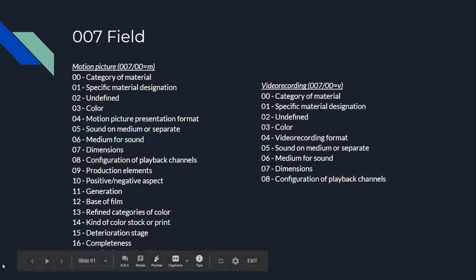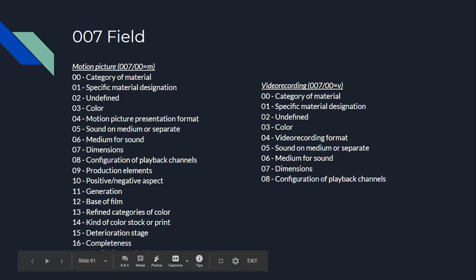The 007 field gets pretty complex for video. There are links to the MARC 21 standards for both motion picture and video recording. The 007 for motion picture gets into the nitty-gritty of the format of the film, while the video recording 007 covers the recording format and details about the cassette or disc. Refer to the MARC 21 guidelines or the OCLC bibliographic formats page for the character positions when formulating this field.